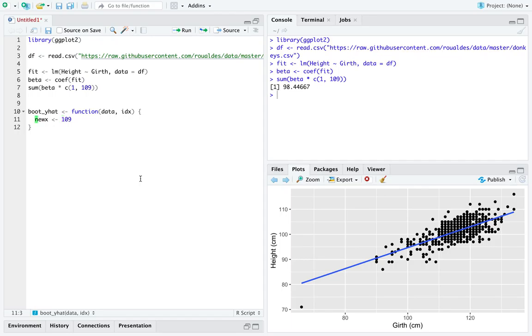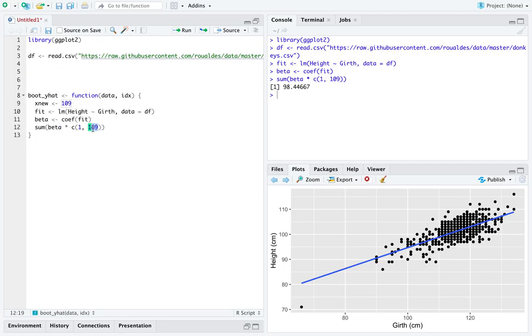Oops, I called it x new earlier. For some specified value of x, we'd have to return the prediction itself after indexing our observations by the resampled indices, idx.